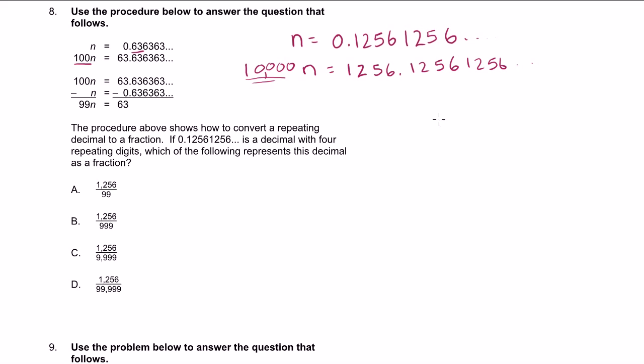You could verify it. Actually, let's multiply it out just to verify that this actually works. If I multiply 1,256 times 10,000, what you could do is you could just multiply it by 1. So you get 1,256. Add four zeros. 1, 2, 3, 4.